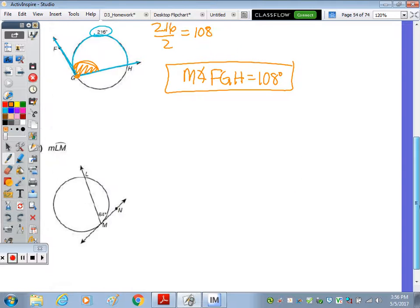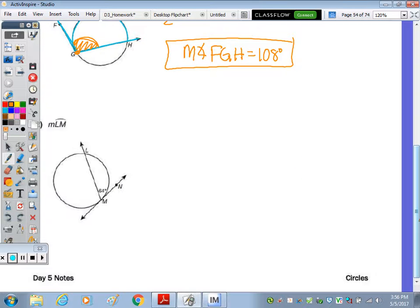And last one. Find the measure of the arc. So given the angle. So if we trace the angle of 64. It's this angle right here. And the vertex of that angle is on the circle. So the arc goes from here to here. That's L to M. I went backwards. M to L. So that is double 64. 2 times 4 is 8. 2 times 6 is 12. So the measure of arc LM is 128 degrees.